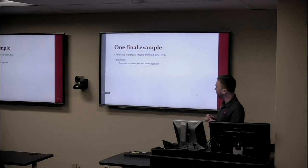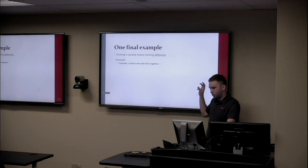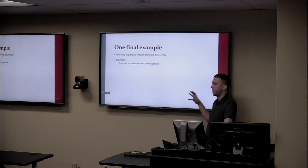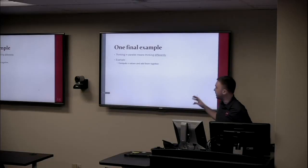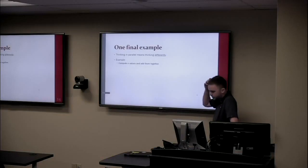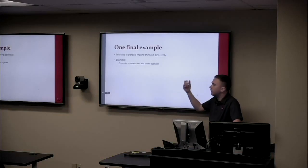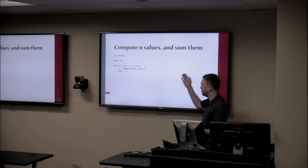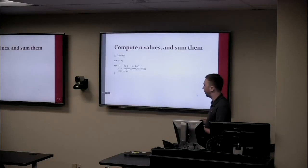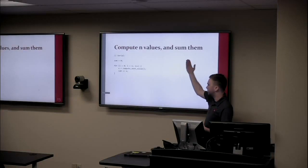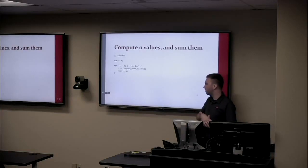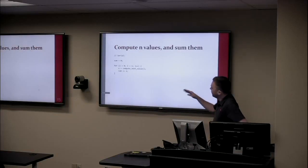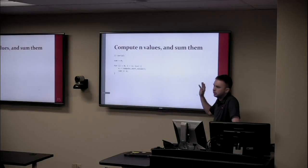Here's one final example to illustrate what I mean by programming as if architecture matters. Here's a CS101 problem: get N values and add them all together. The serial version is simple: sum equals zero, then loop from zero to N, compute the next value and add it to sum. Now let's say we want this to run on 20 cores instead of one.